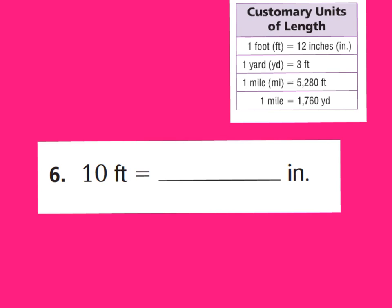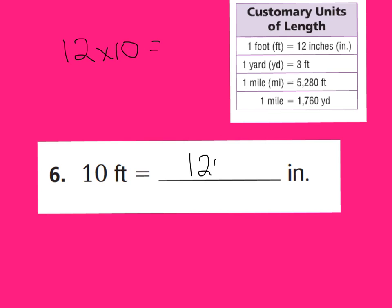Let's take a look at question number 6. Number 6 is feet and inches. Feet are bigger than inches, so going from a big unit to a smaller one, remember you're going to multiply. Looking at our chart, 1 foot equals 12 inches. So 10 feet would equal how many inches? Pause the video and solve this problem by yourself. Your equation should have been 10 times 12, or 12 times 10 — the order of factors doesn't matter. 12 times 10 equals 120 inches.